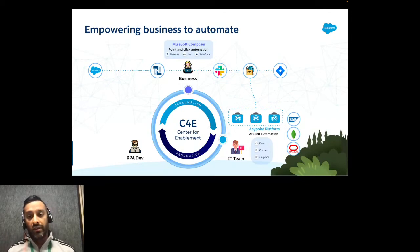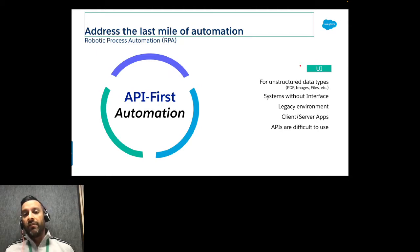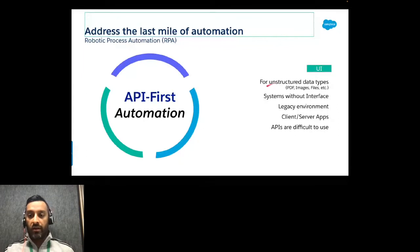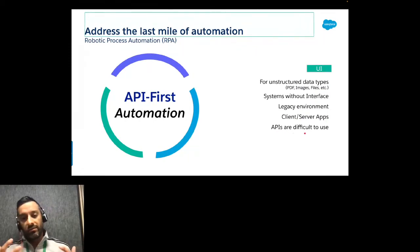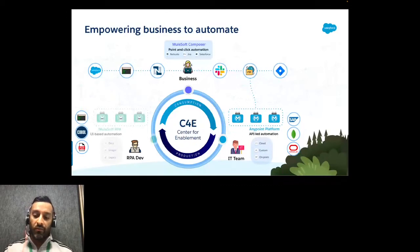Now if there's a system with no interface — no API available — this is where RPA comes in as the last mile. Any system that cannot be unlocked through APIs or headless interfaces requires UI automation. Use cases include unstructured data, images, PDF files, systems without interfaces, legacy environments, client-server applications, or complex web apps with incomplete API coverage.